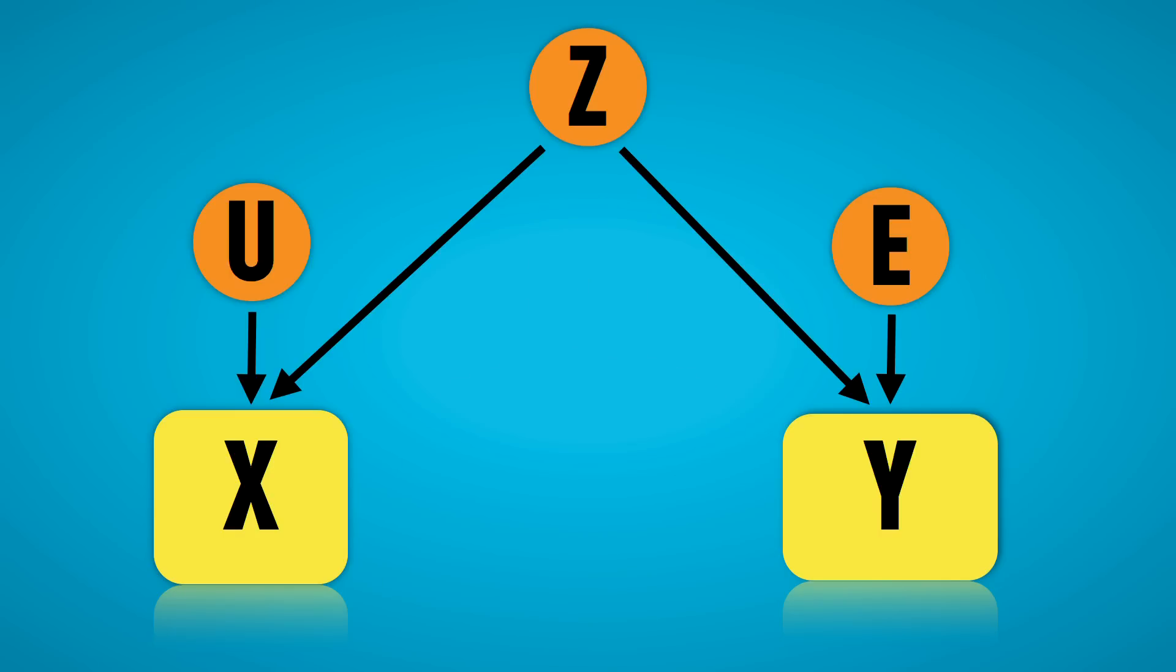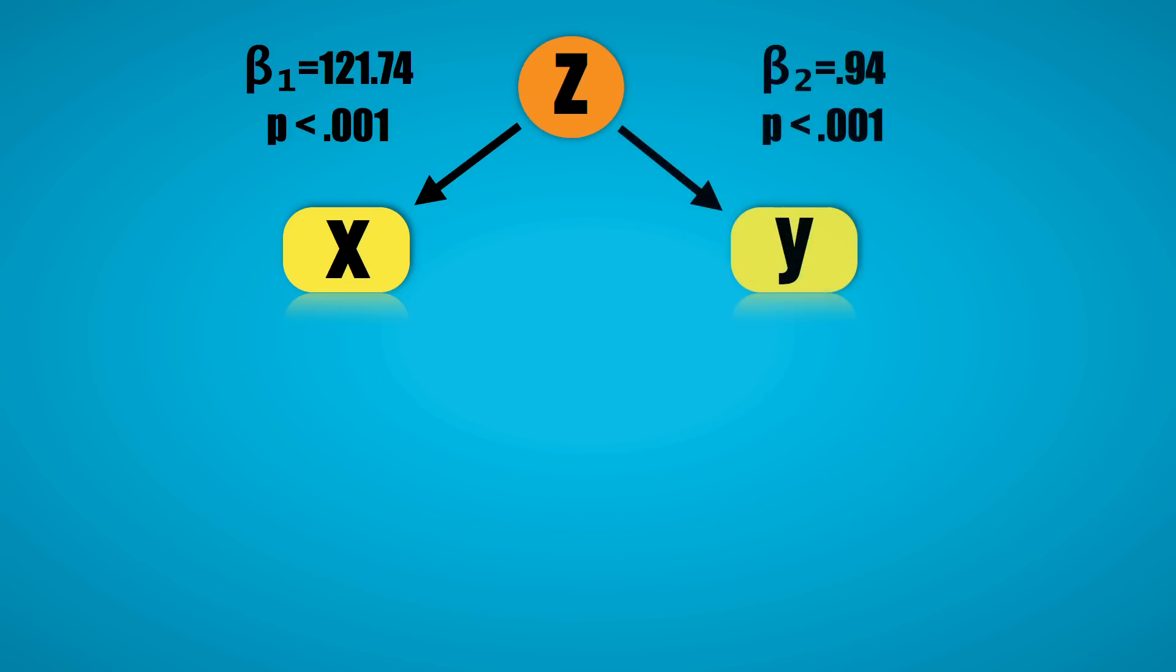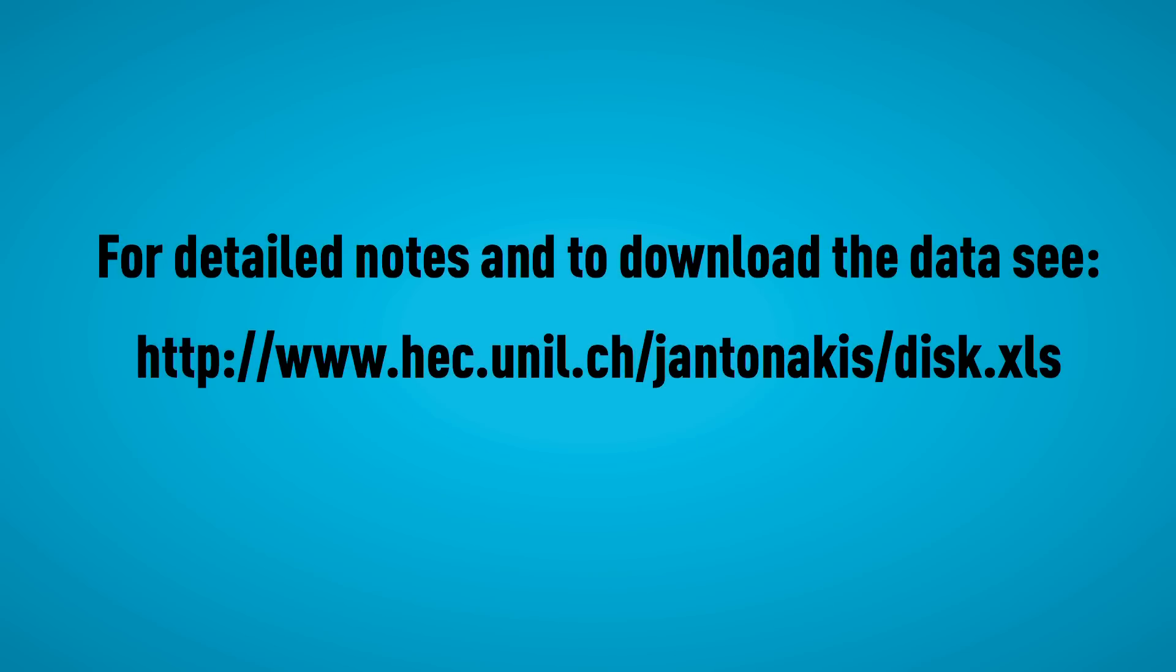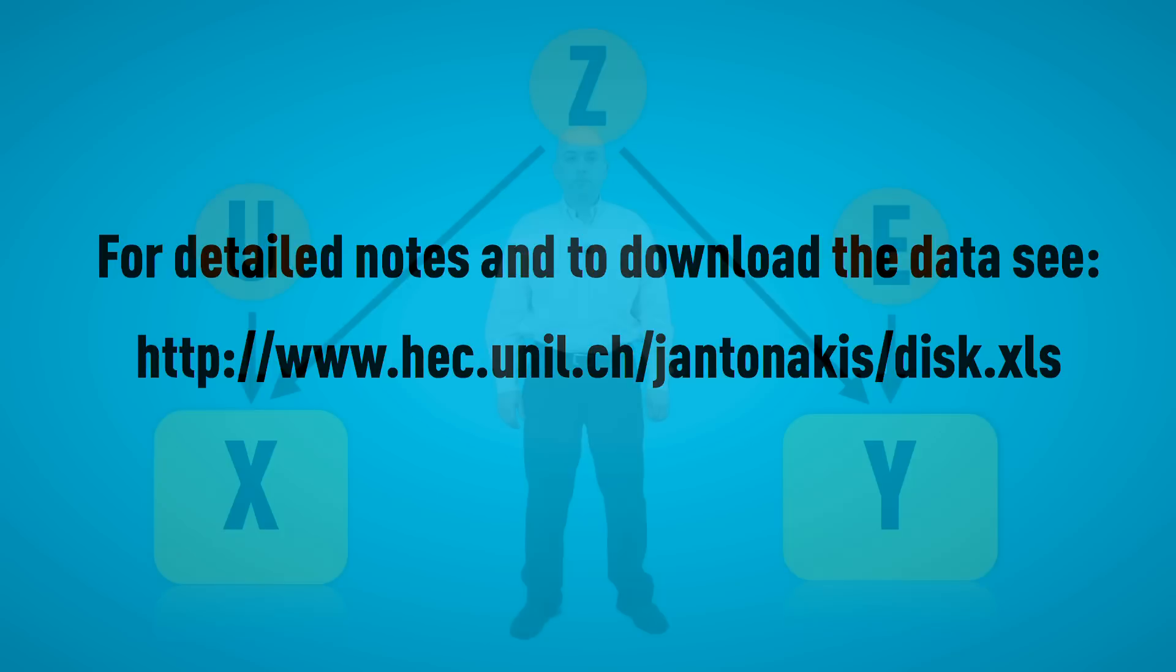To better understand why the relation between x and y is actually zero, I estimated a multivariate regression where, firstly, z predicts x, how loud the sound was, using a linear model. Z predicts y, whether the disc shattered, using a linear probability model estimated with OLS. And the disturbances of x and y, u and e, are correlated. The residual correlation between x and y is actually zero when we account for what causes x and y. For detailed notes and to download the data, please refer to the following link on my webpage.